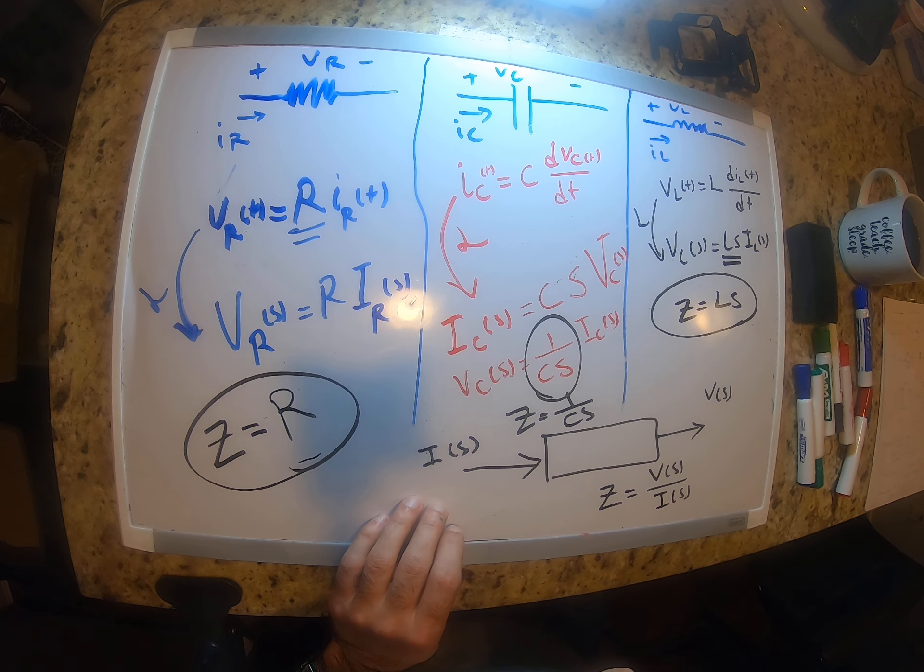The same applies to the circuit current: I equals V_in divided by (R + 1/(jωC)), which simplifies to V_in times jωC divided by (1 + jωRC). Replacing jω with S gives the transfer function for the current.